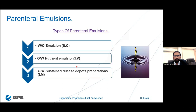Basically there are three types of emulsions available: water-in-oil emulsions, oil-in-water emulsions, and oil-in-water nutrition emulsions used intravenously. Water-in-oil is used subcutaneously, and oil-in-water sustained release depot preparations are used intramuscularly.